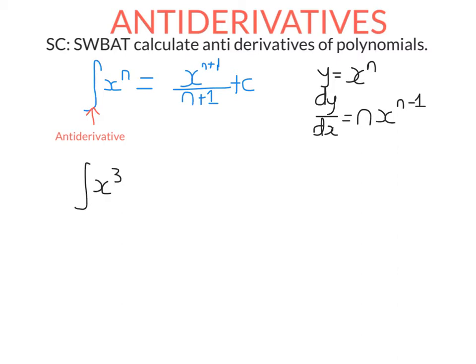Let's say I take the antiderivative of x to the power of three. I'm saying: what function, when you differentiate it, gives me x to the power of three? Using the formula, I'm going to increase the power by one and then divide by that new power — giving x to the power of four over four. If I differentiate this I get this.